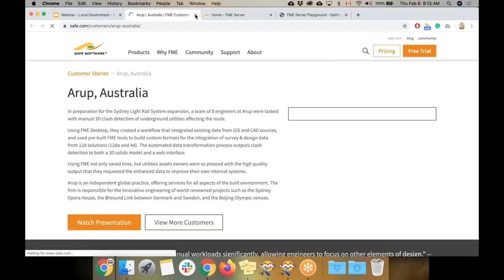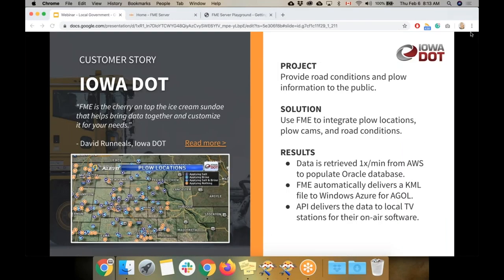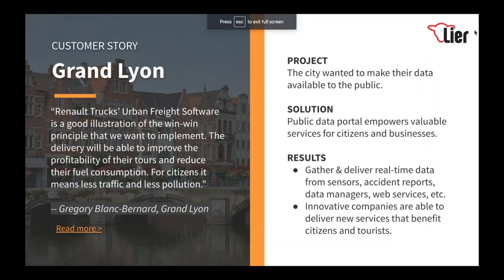Grand Lyon is the second largest city in France. They also use FME to provide streaming data to the public as well as to local businesses. Using the city's data portal, businesses are able to build innovative new services to operate more smoothly and to benefit citizens. Multiple sources are integrated including sensors, reports, and web services, and the city automates the workflow to make sure the resulting dataset reflects the most up-to-date information. One local business, Renault Trucks, was able to increase profit and reduce fuel consumption, resulting in less traffic and pollution for citizens — definitely a win-win scenario.